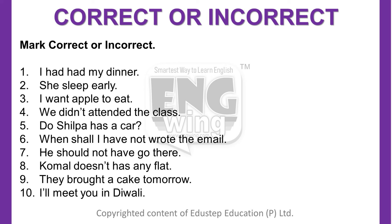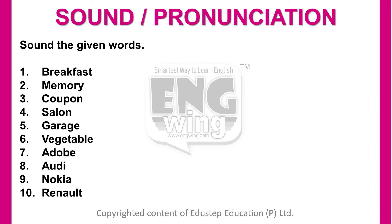'I want an apple' — we are missing the article here. It's 'a breakfast,' not just 'breakfast.' It's 'a memory.' It's 'a coupon,' not 'coupon.' Mr. Agulistan, can you sound the fourth word? — 'Salon.' It's 'a salon.'